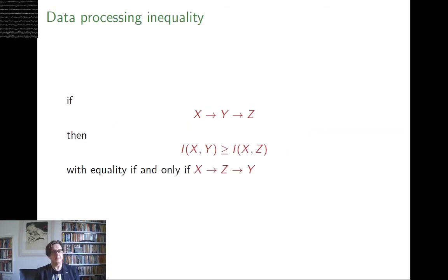The data processing inequality tells us that if X, Y, and Z form a Markov chain, then the information that, the mutual information between X and Y, so this is the information shared between X and Y, is greater than the information between X and Z. In other words, if you go to the two ends of the Markov chain, the X and the Z, the amount of information X holds about Z, or conversely, the amount of information Z holds about X, that overlap we saw in the diagram in lecture four, that is necessarily smaller than the overlap between X and Y.